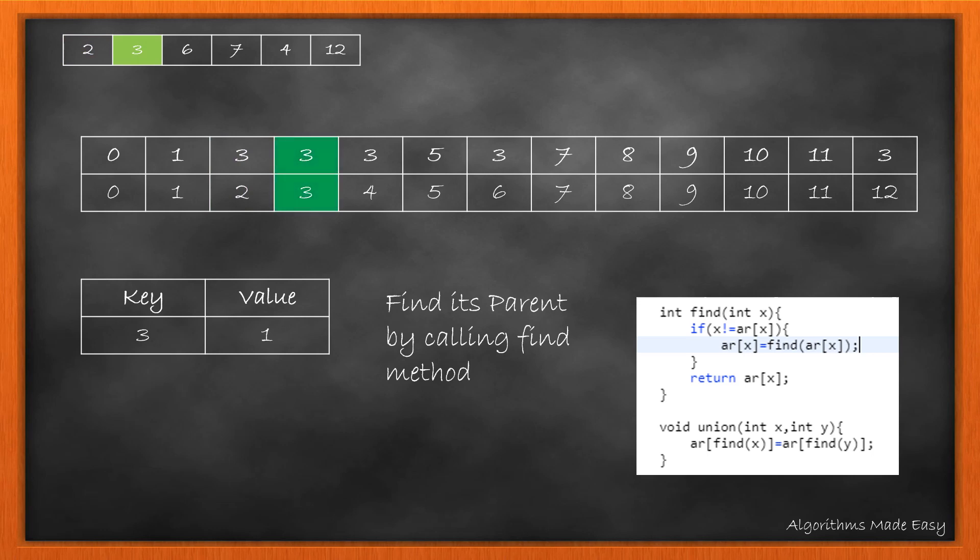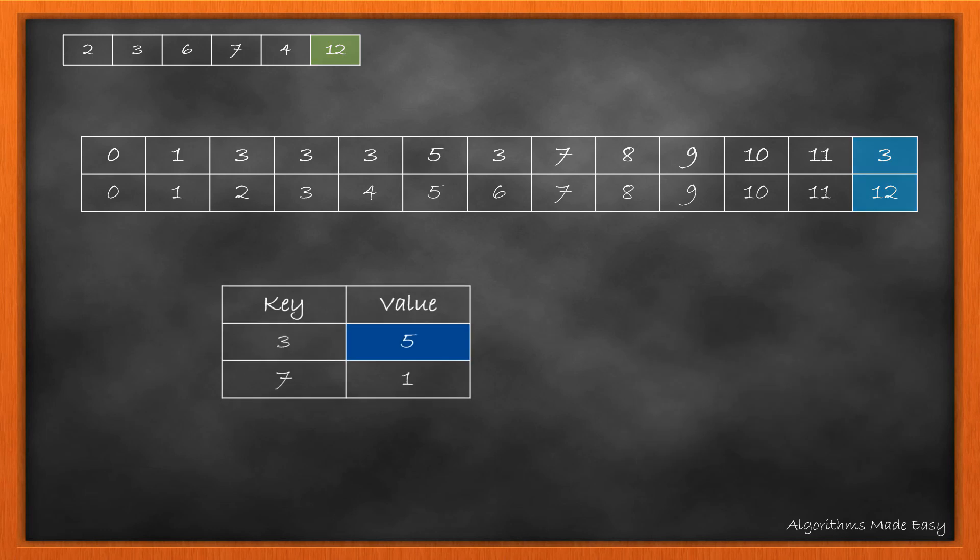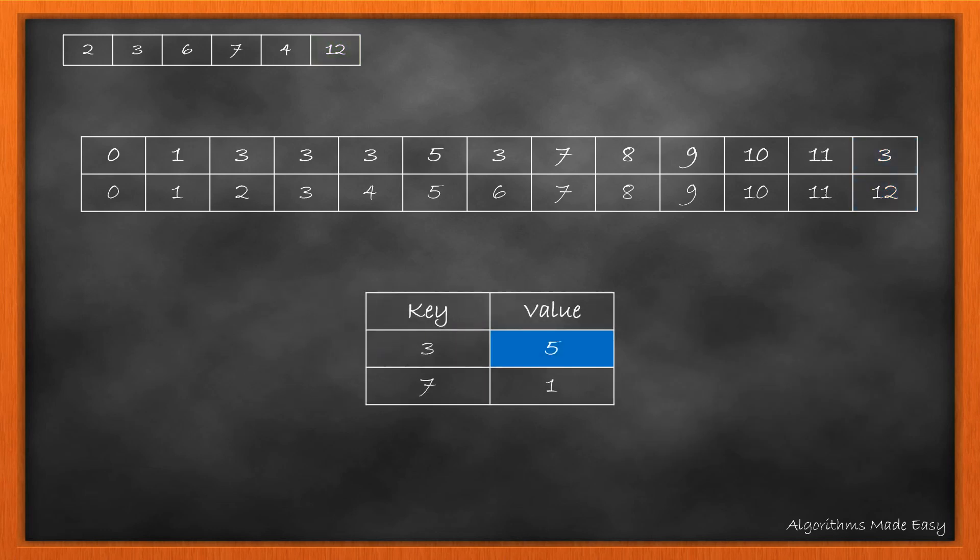Parent of 6 is also 3, so we increment its value. Parent of 7 is 7 itself, so we put 7 in the map. For 4, we increment the parent 3 value to 4. Lastly, for 12, we increment 3 again. It completes our loop and now we return the maximum value in the map, which signifies that there are 5 elements connected to each other through one or more common factors.